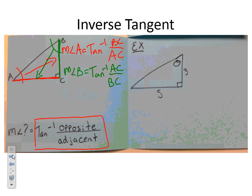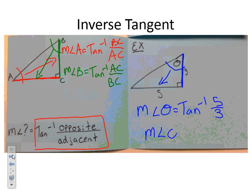Let's move on to the example. If I want to find the measure of angle theta, I'm going to do the opposite over the adjacent — that's really important. I'll use inverse tangent: the opposite is 5 over the adjacent, which is 3. Type this into your calculator and, rounding to the nearest degree, we get 59 degrees.